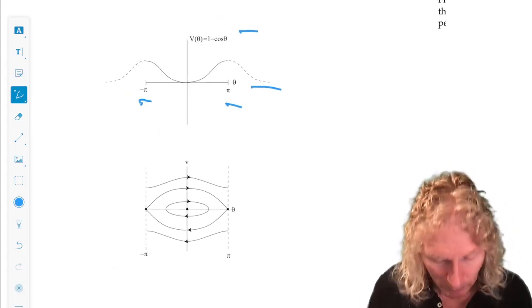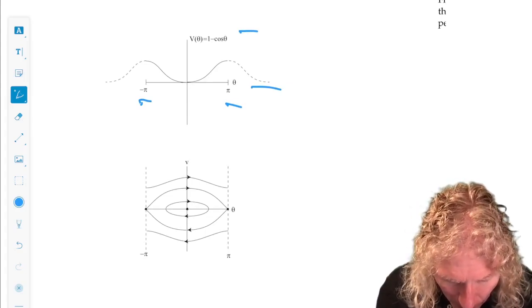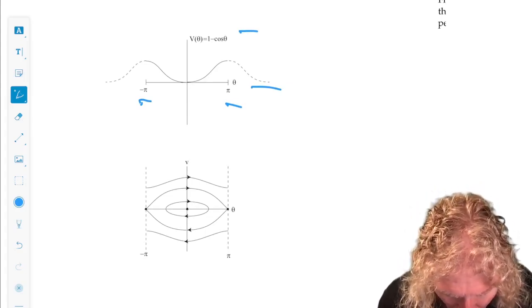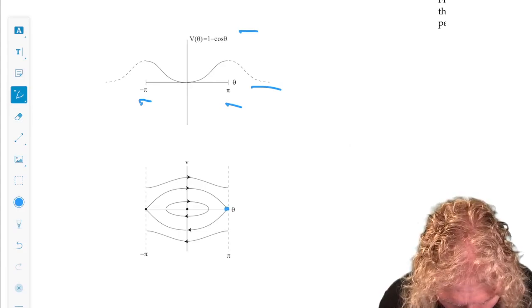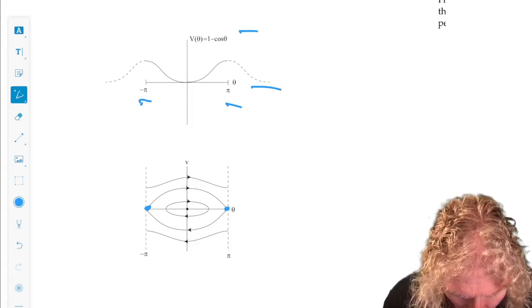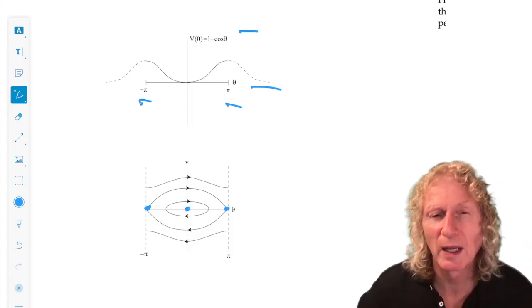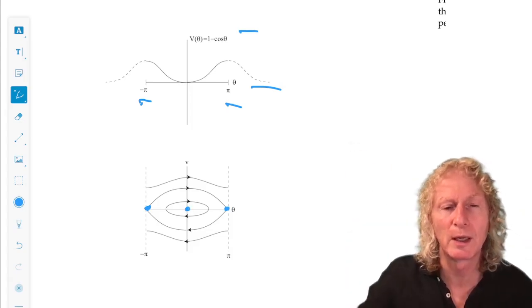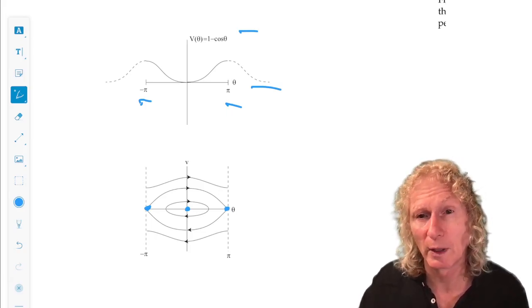Pi is a relative maximum, so that's an unstable equilibrium. Theta equals 0 is a relative minimum, that's stable. That's just the pendulum sticking straight down.